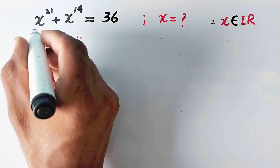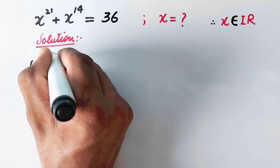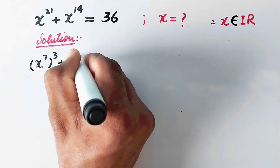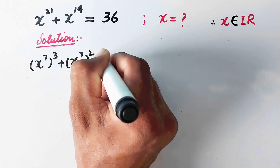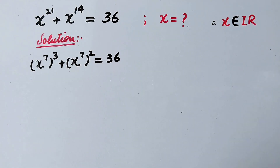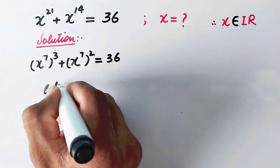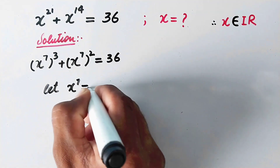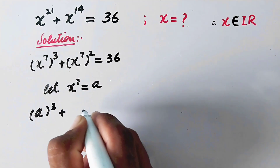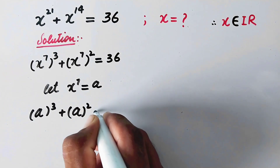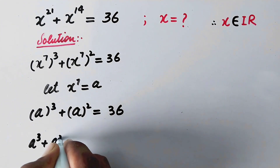In the first step we can write x raised to power 27 as x raised to power 7 times power 3, plus x raised to power 7 times power 2, equal to 36. Here we can see that x raised to power 7 is common in both terms, so we will let x raised to power 7 equal to a. Now we can write a cubed plus a squared is equal to 36.